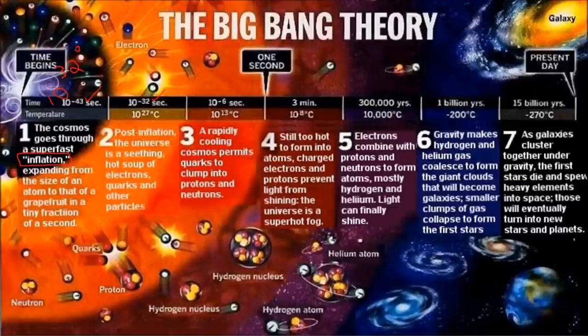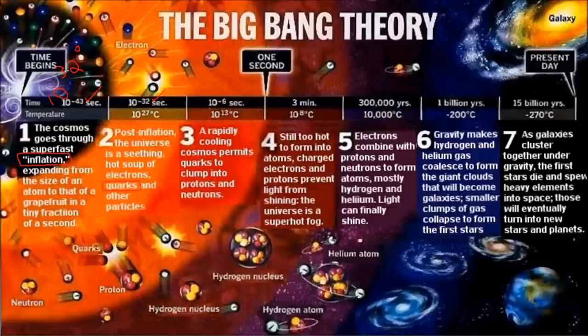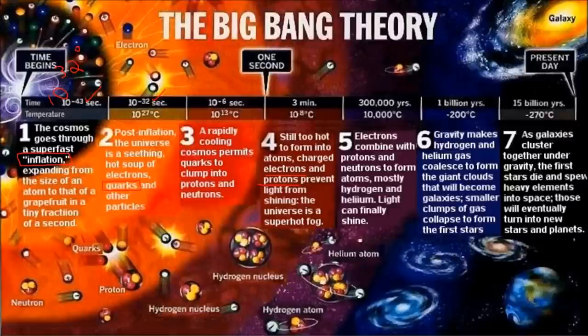After inflation, the temperature fell significantly from 10 to the power 32 degrees Celsius to 10 to the power 27 degrees Celsius. At this time the universe was very hot and there was formation of electrons and quarks. Quarks are fundamental particles of the universe, tinier than protons, neutrons, and electrons — they are fundamental to the formation of basic subatomic particles. After the quarks were formed, after about 3 minutes from the Big Bang, the universe gave rise to the main subatomic particles: protons and neutrons. Once these particles came into existence, the temperature started falling significantly. The temperature was still high enough that light could not escape, so there was no light in the universe.